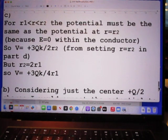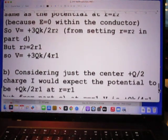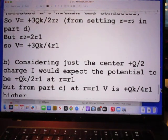Now, he does C. For R smaller than R2 and larger than R1, the potential must be the same as the potential at R equals R2 because E is zero within the conductor. So, he finds the potential.